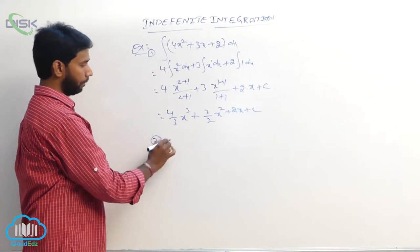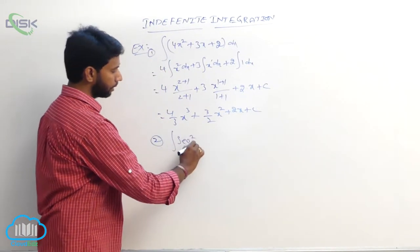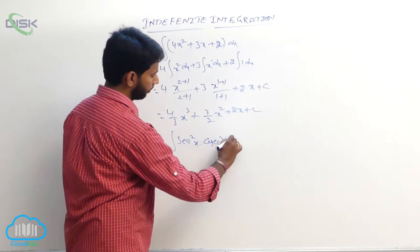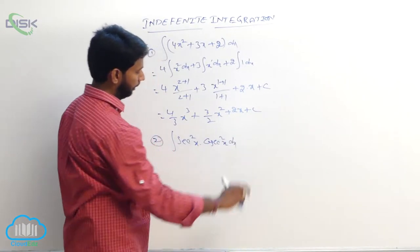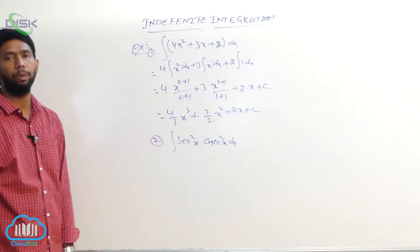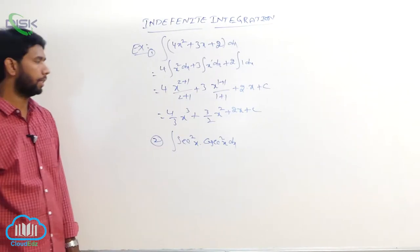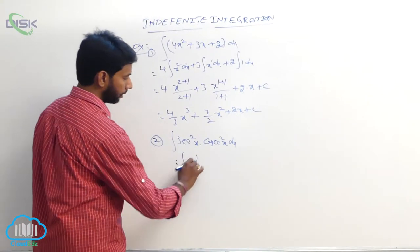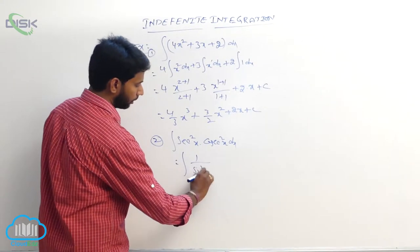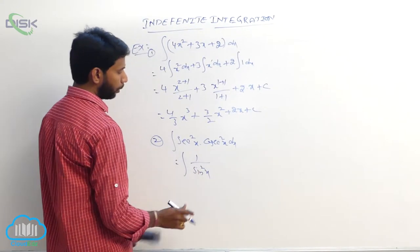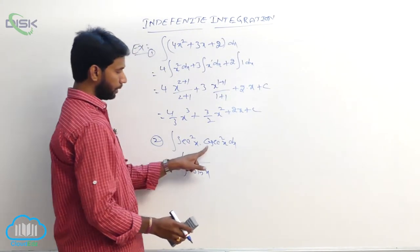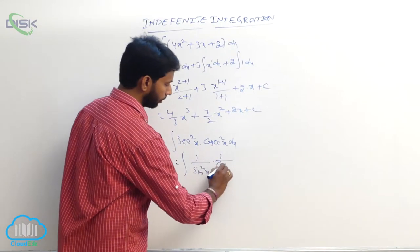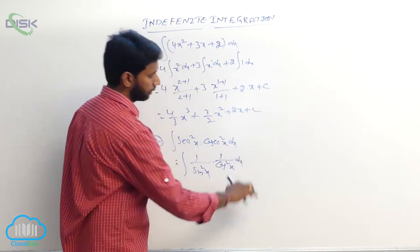Go to the next example: integral of sec²x times csc²x dx. First, convert into sine and cosine functions: csc²x is 1/sin²x and sec²x is 1/cos²x, giving integral of 1/(sin²x cos²x) dx.